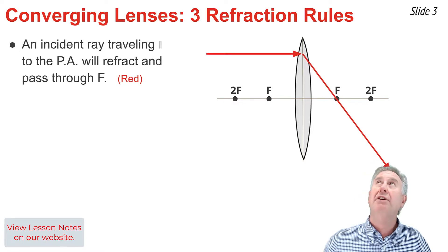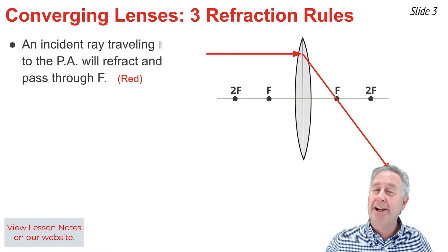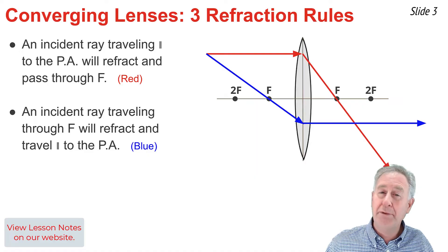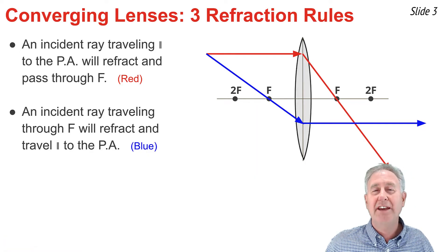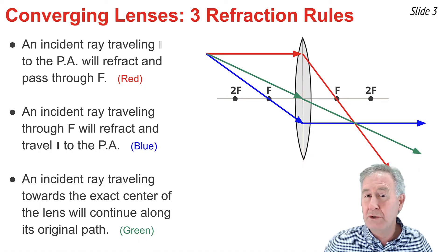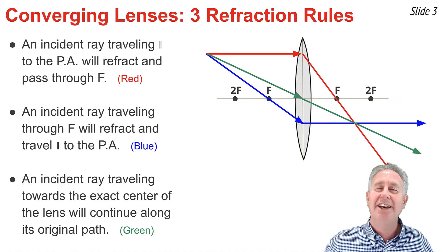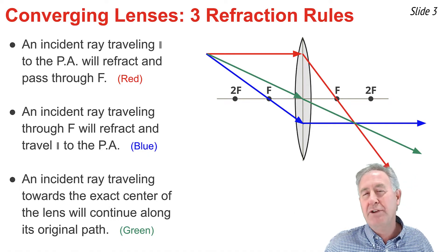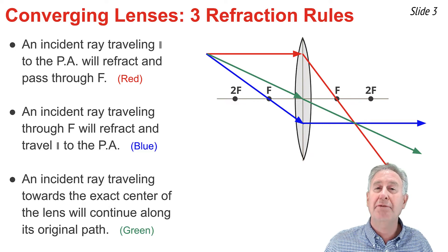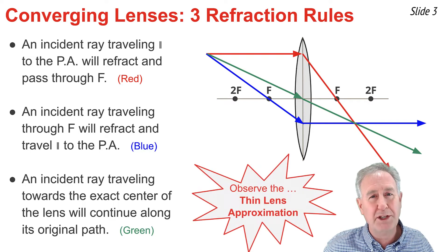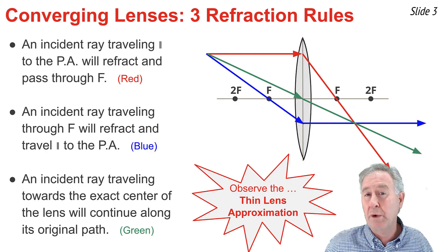In that video, I highlighted three specific incident rays for the predictable manner by which they refract. First, there's the ray of light that is traveling parallel to the principal axis — upon refraction, it passes through the focal point. Then there's the ray of light that passes through the focal point on the way to the lens — it refracts and travels parallel to the principal axis. Finally, there's the ray of light that travels towards the direct center of the lens. It bends as it enters and bends as it leaves, but the net effect is it continues along its original path. Note that all of the refraction is taking place at the vertical axis of the lens — this is consistent with the so-called thin lens approximation, a common practice when drawing ray diagrams.